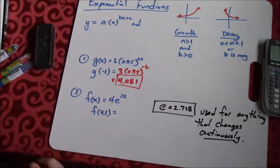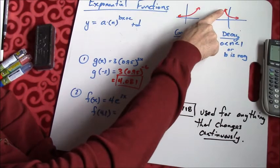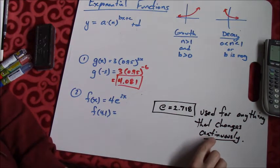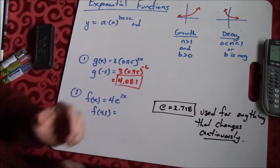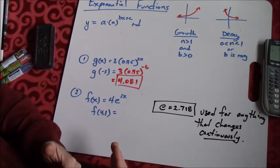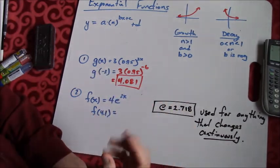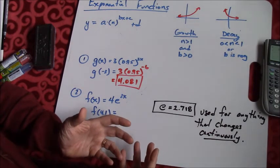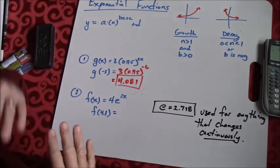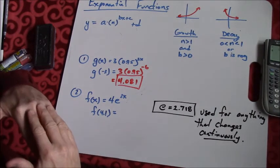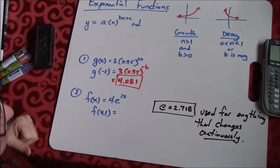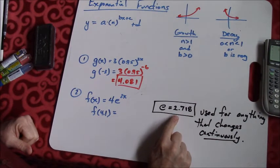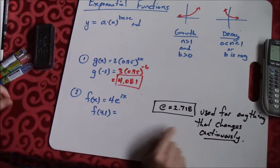But this is a number that is used for anything that changes continuously. That word continuous is going to be really important to us. If you think about a car, we've already said that's something that depreciates. It depreciates continuously. It doesn't just decrease in value at the end of each week or each month. It's every single day, every single minute, your car is decreasing in value when you buy one. Or if you invest money, your money grows continuously because the stock market's always changing. It doesn't just change at the end of the week.